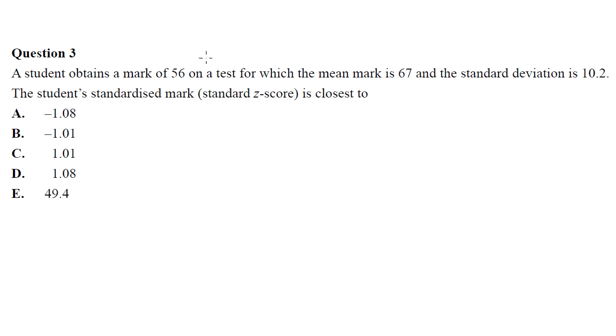And this is how it might appear on an exam. This is a real question that appeared on the 2007 Exam 1, the multiple choice exam. A student obtains a mark of 56 on a test for which the mean mark is 67, and the standard deviation is 10.2. The student's standardised mark, standard z-score, is closest to. So you just apply that formula. z equals x, the observed value, minus the mean of x, the mean of the data set, divided by the standard deviation of that data set.